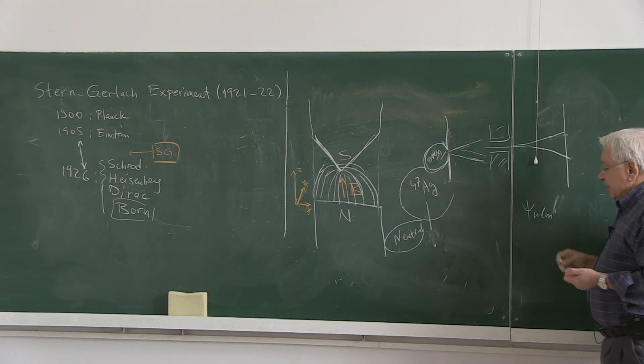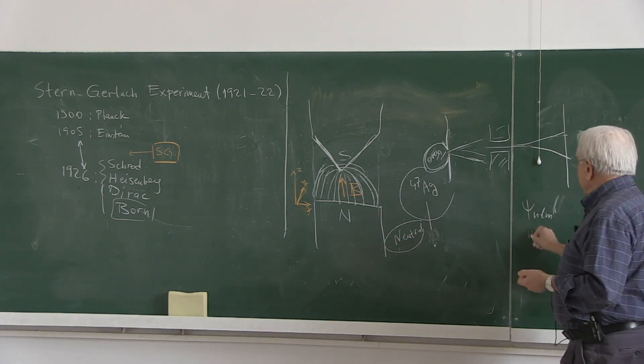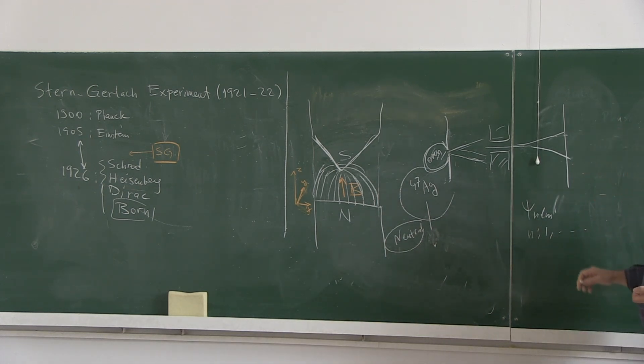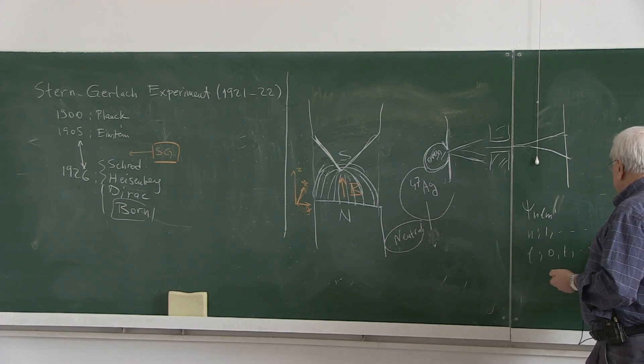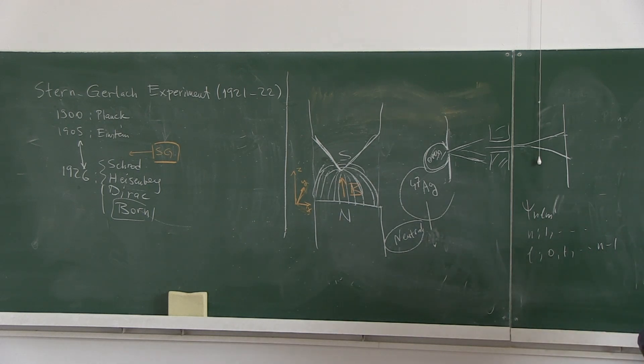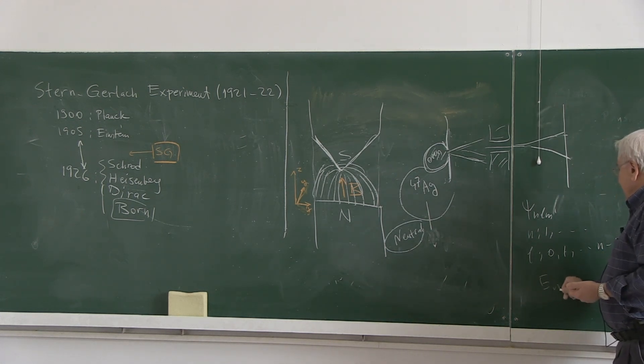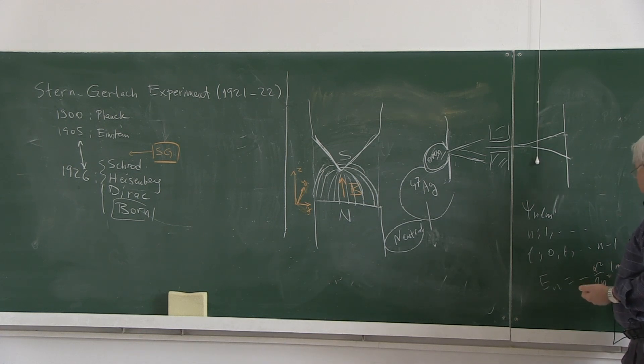N is the principal quantum number. L is the orbital angular momentum. M is the magnetic quantum number. N runs from 1 to anything. L runs from 0 to N minus 1. M is accordingly bounded by minus L to L. Energy is alpha squared divided by 2N squared MC squared. Or if it is hydrogen-like, you have to put in the Z.